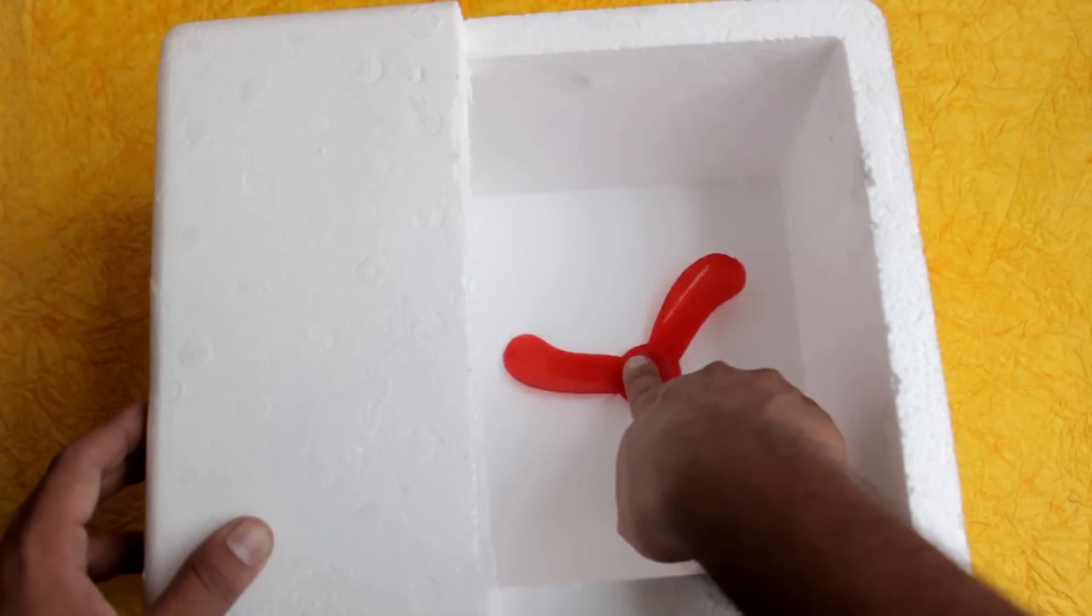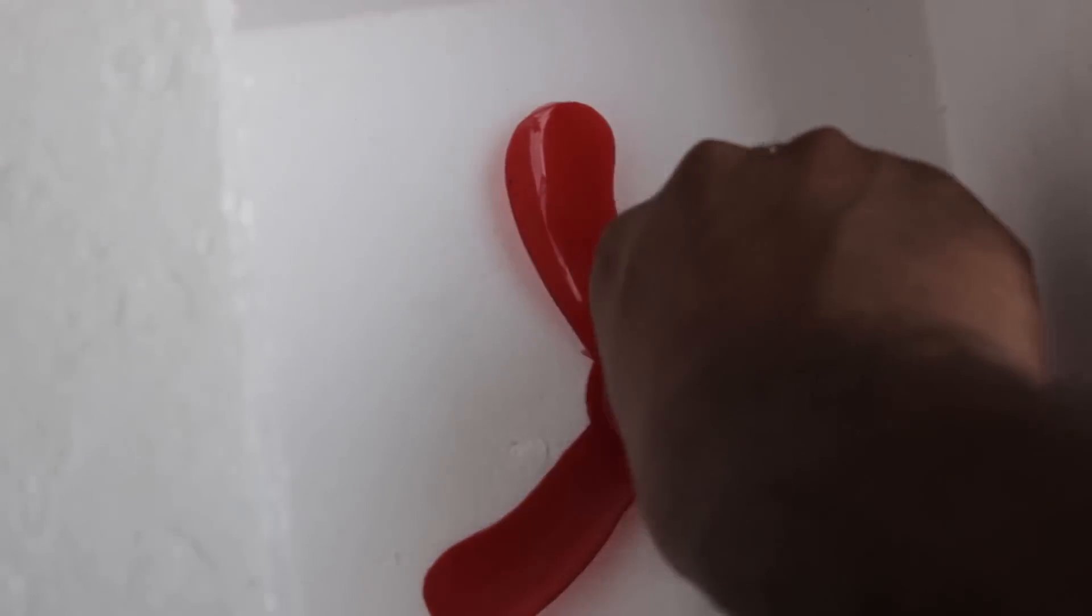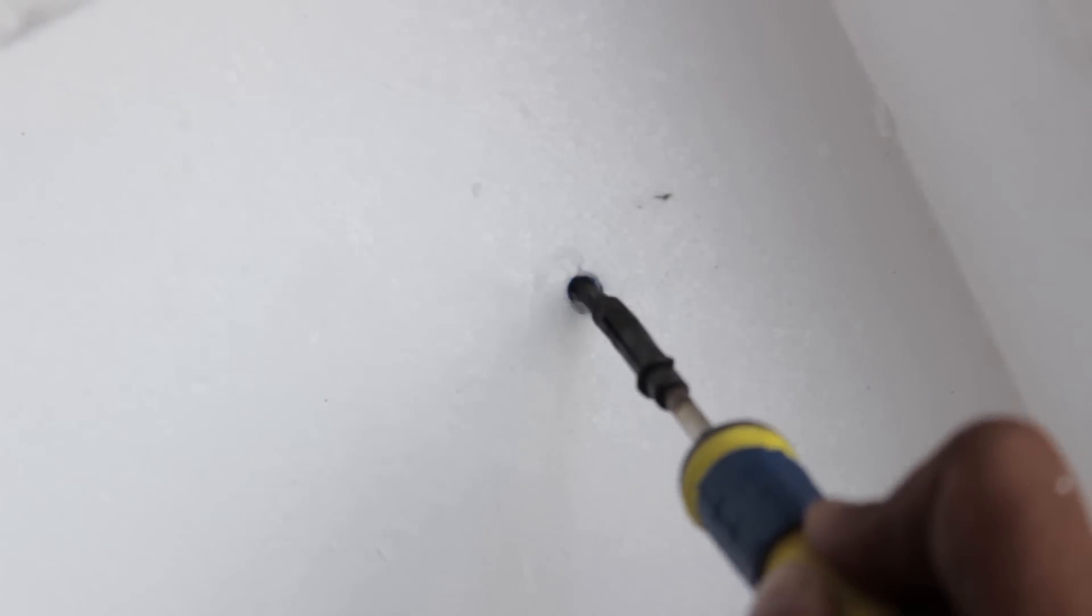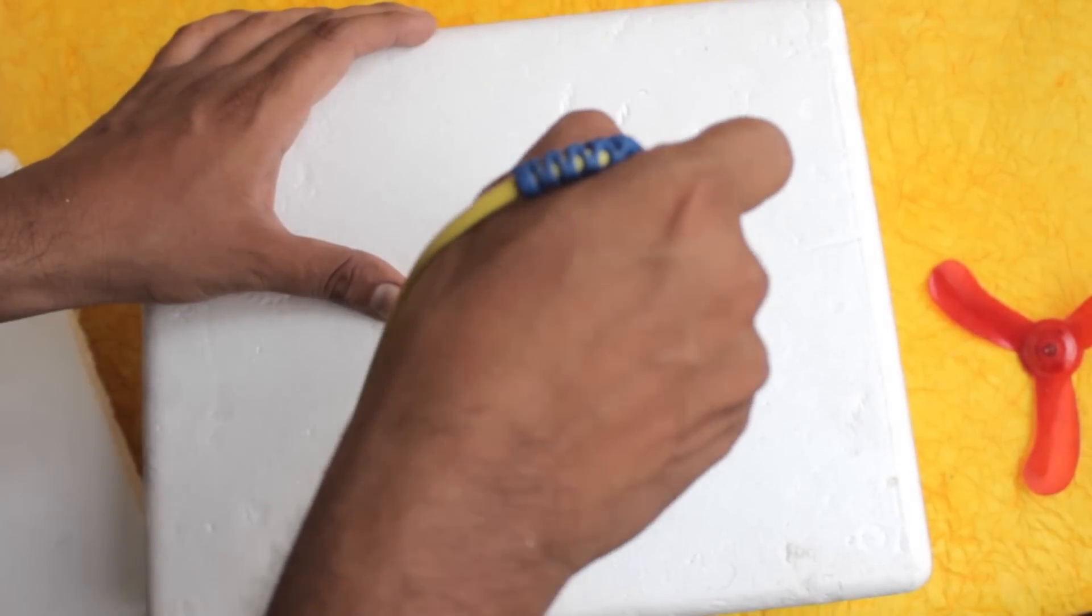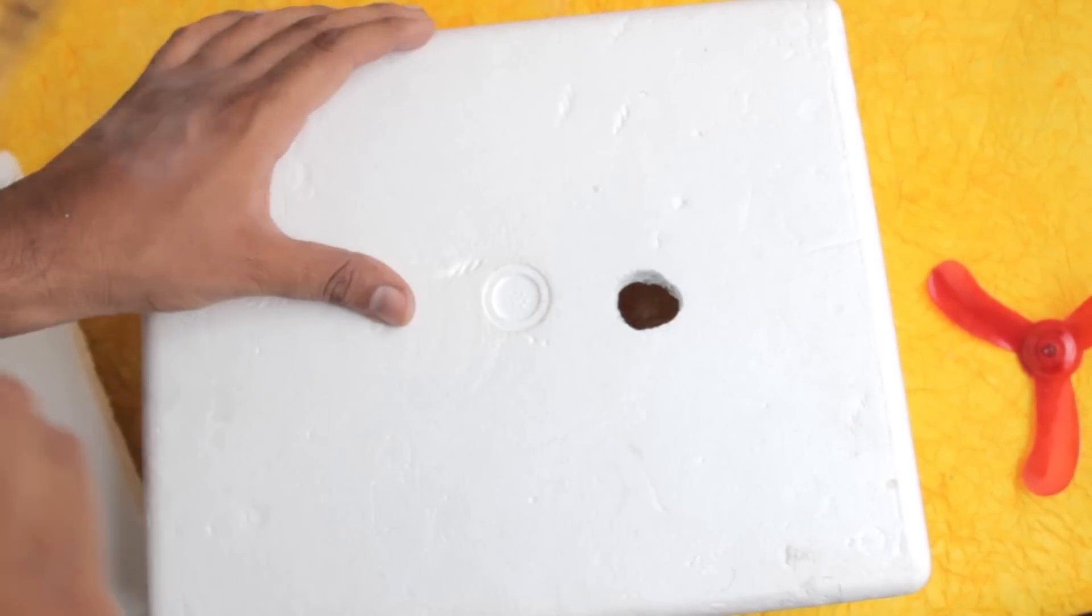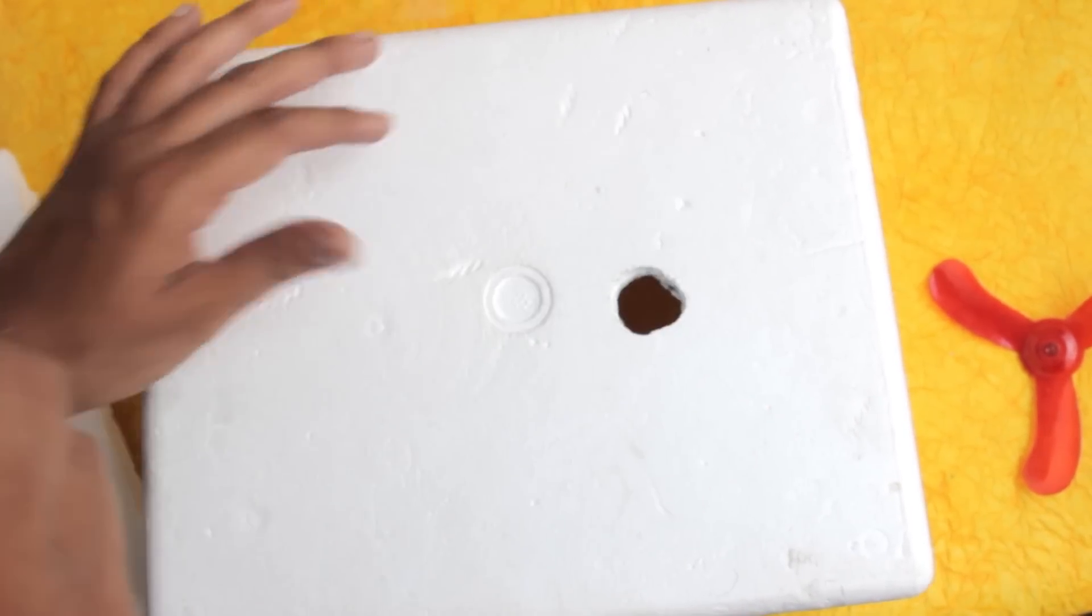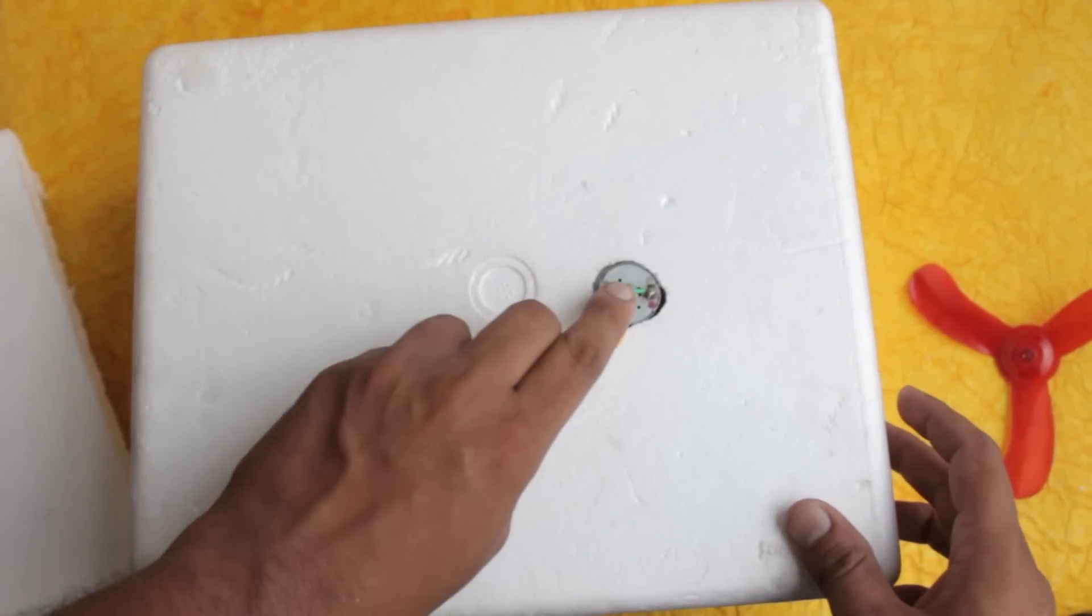Press it at the center and mark it. Using any hot object, make a hole to place the motor in it. Now place the motor inside the hole and apply glue.